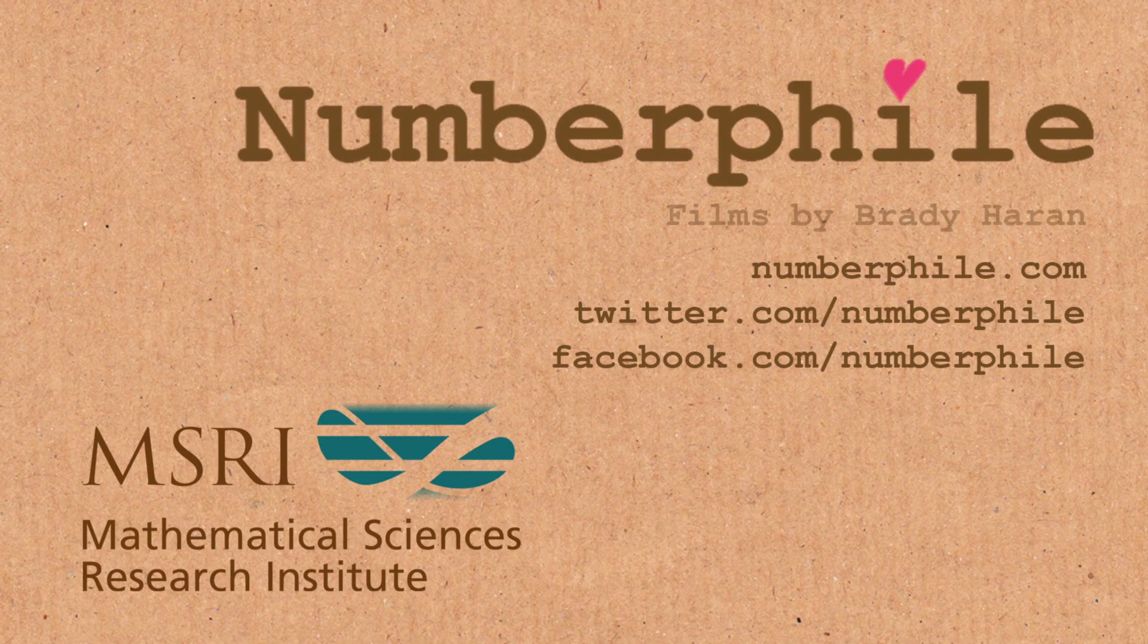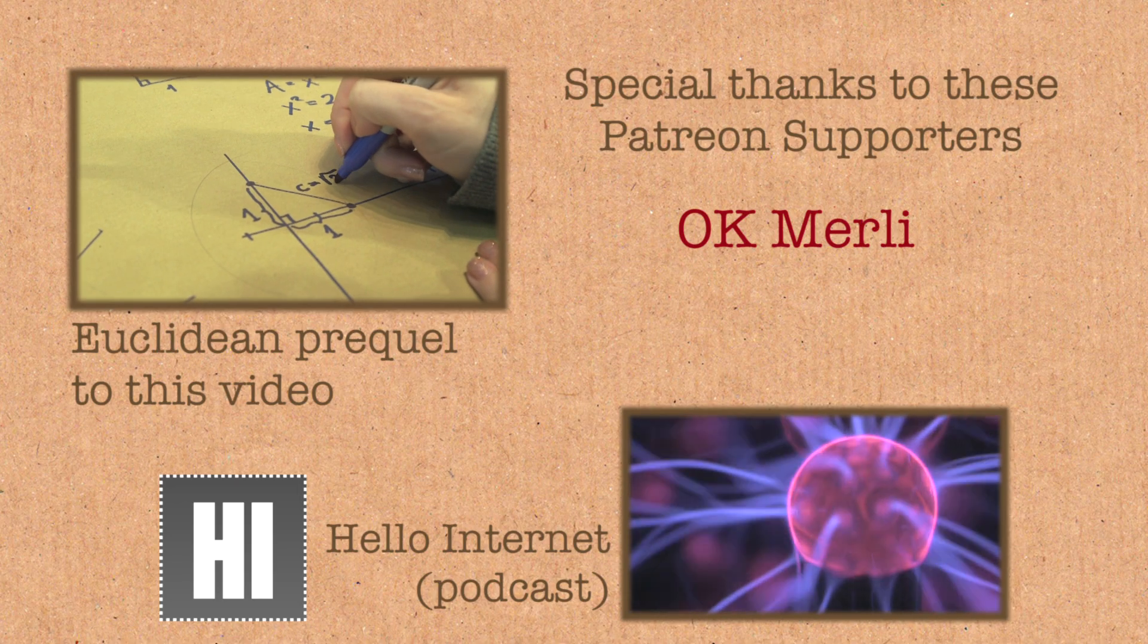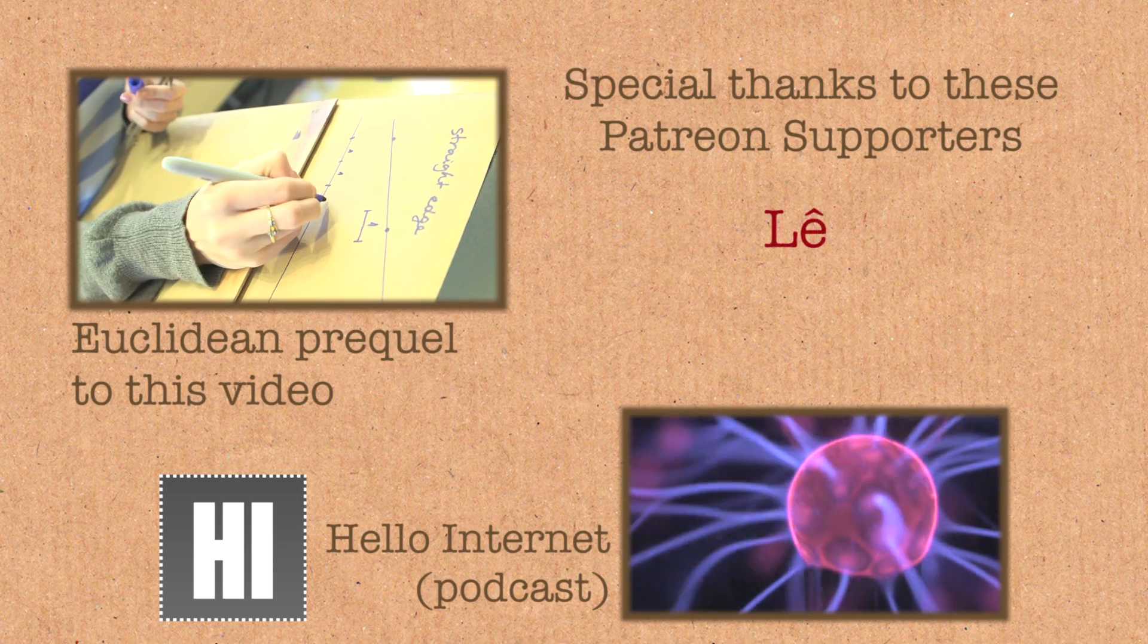So for example, I showed you how to do square root two. I showed you how to do three. I showed you how to do one third. It turns out that you can do all numbers that just involve fractions and square roots and addition and subtraction.